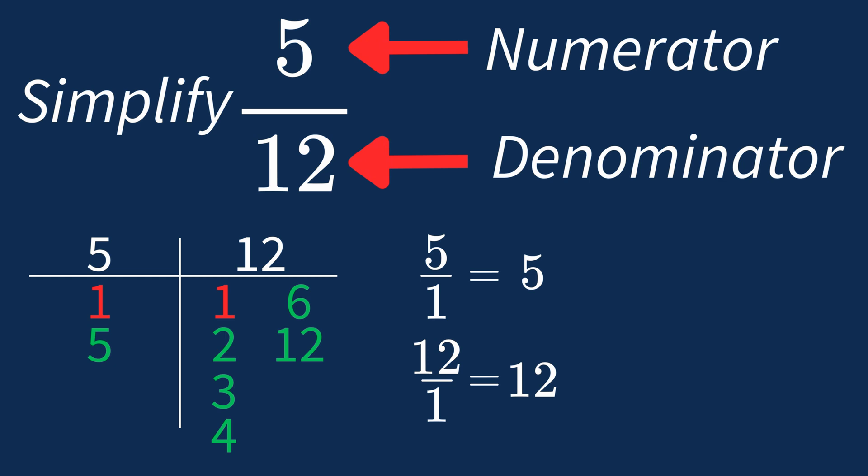So after dividing both the numerator and denominator by their greatest common factor of 1, we still end up with the same fraction, 5 over 12.